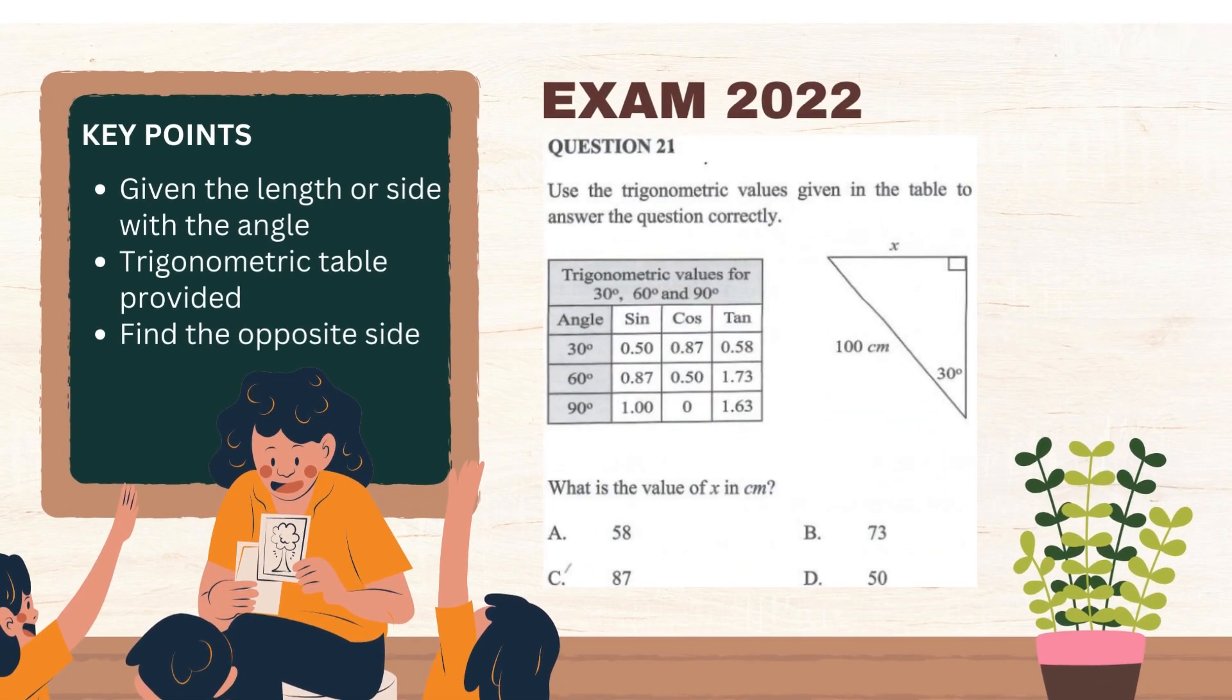Finally, in contrast with the other two questions, the setting of year 2022 exam was also similar to year 2020 exam. By looking at the question, the three important key notes that we also identified were one length and the reference angle was given. The table of trigonometric ratio was also provided and the task was to find the unknown length. Now take a moment to look through the question.